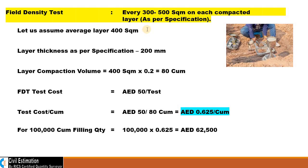For every 300 to 500 square meters of each compacted layer, we need to do one field density test. Once the field density test is passed by the third party agency, then only we will do the next layer of filling. As per the ADNOB Group specification, for every 300 to 500 square meters of each compacted layer, we have to do one FDT test.